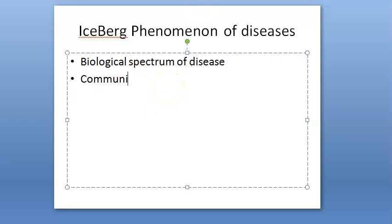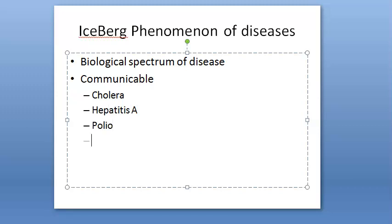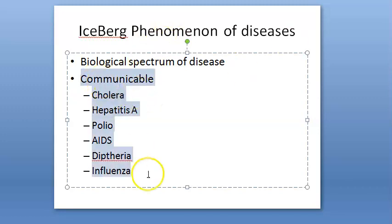Examples of the iceberg phenomenon in communicable diseases include gastroenteritis, cholera, hepatitis A — all food-borne diseases — as well as polio, diphtheria, influenza, AIDS, etc.